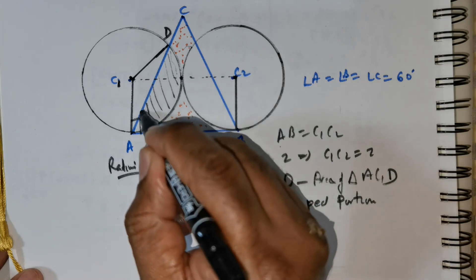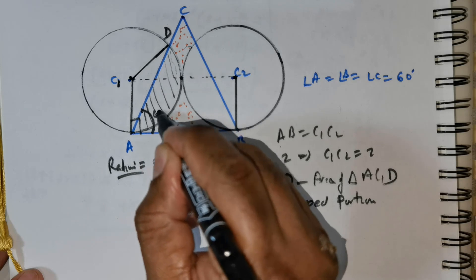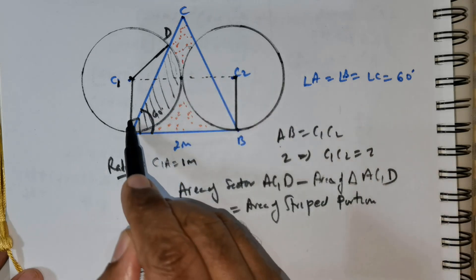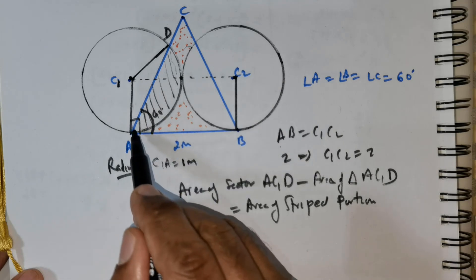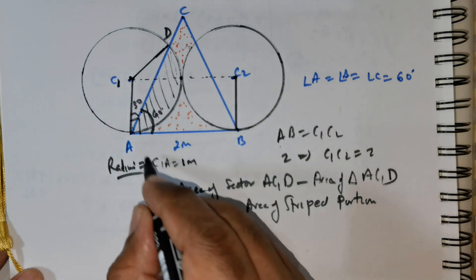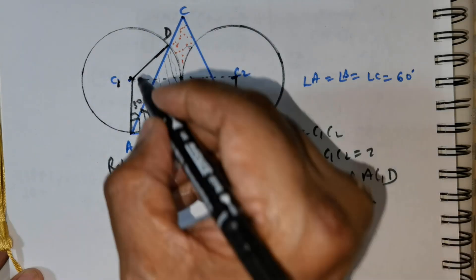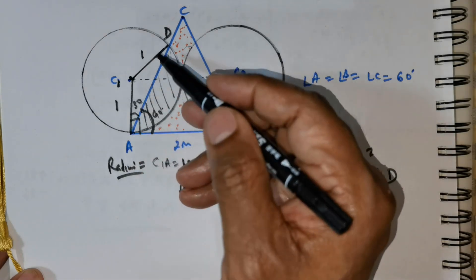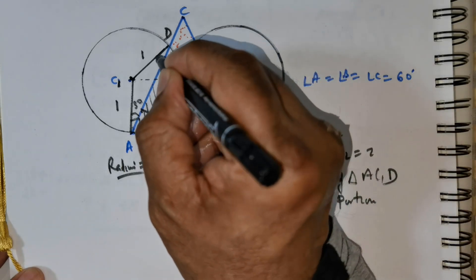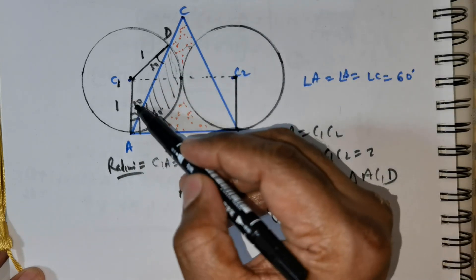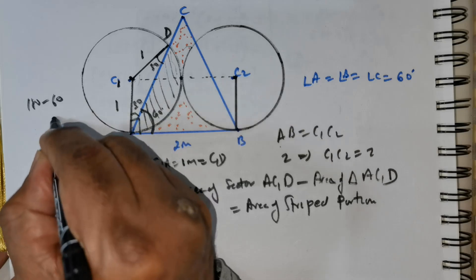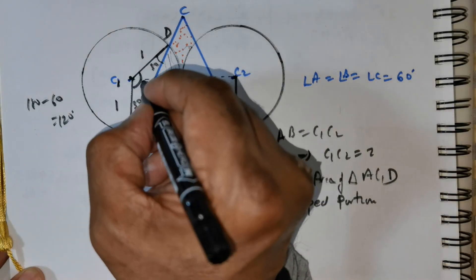We know angle A is 60 degrees in the equilateral triangle. But there is an angle made between the radius and the tangent — that is 90 degrees. If this is 90 and angle A is 60, then this remaining angle is going to be 30 degrees. Now C1A is the radius and C1D is also a radius, so both are 1 meter — two sides are equal, making this an isosceles triangle. In an isosceles triangle, base angles are always the same, so both base angles are 30 degrees. Therefore the angle at C1 is 180 minus 30 plus 30, which equals 120 degrees.